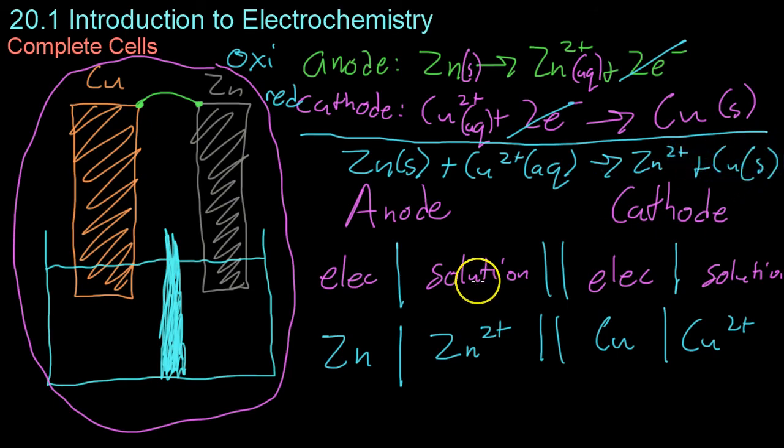In the next video we're going to be moving on to discuss specific examples of different types of these cells other than the zinc copper cell we've looked at as a universal example for this video, as well as how these work in the real world.